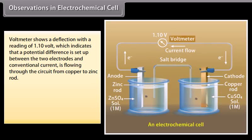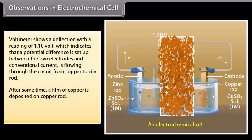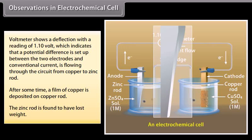Observations in electrochemical cell: The voltmeter shows a deflection with a reading of 1.10 volt, which indicates that a potential difference is set up between the two electrodes, and conventional current is flowing through the circuit from copper to zinc rod. After some time, a film of copper is deposited on the copper rod, and the zinc rod is found to have lost weight.